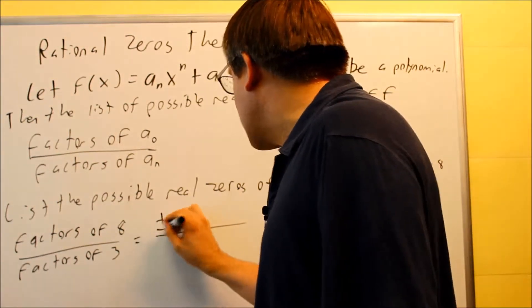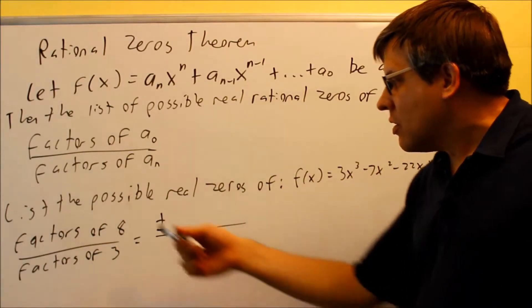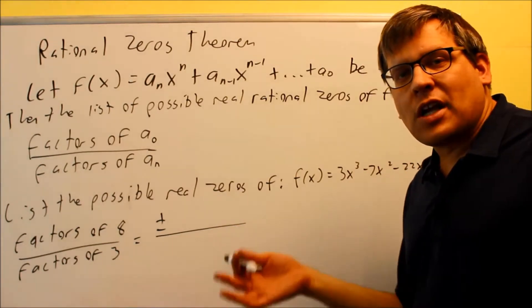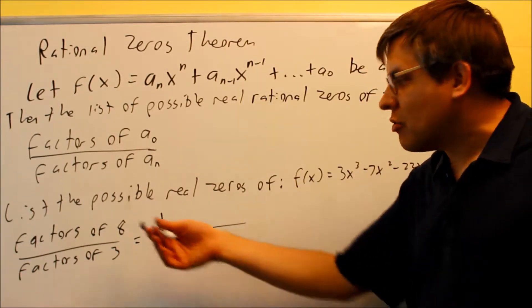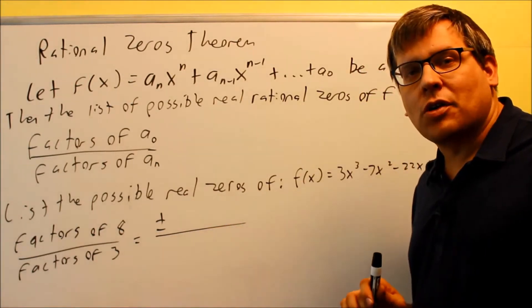2 and 4 multiply to make 8, but negative 2 and negative 4 also make 8. So we're going to consider all those plus and minus situations by putting plus or minus there in front.